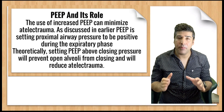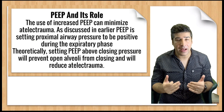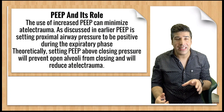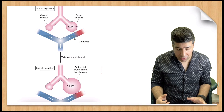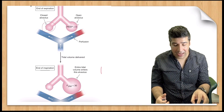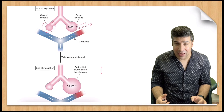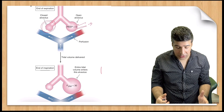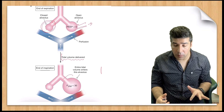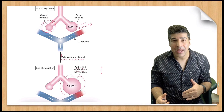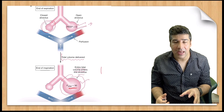To understand the importance of positive end-expiratory pressure in preventing atelectrauma, increasing compliance, and improving oxygenation, consider these figures. Without PEEP, one alveolus is closed and another is open. The closed alveolus does not participate in ventilation, so the entire tidal volume goes into the open alveolus, leading to overdistension and increased plateau pressures.